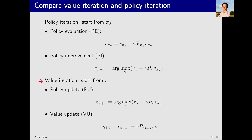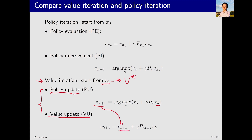Value iteration differs in its starting point. It doesn't start with an initial policy pi zero, but with an initial value v zero. Iteratively, it converges to v star, the optimal state value. Its k-th iteration also has two steps. The first step is policy update, where a new policy pi_{k+1} is derived from v_k. The second step is value update — based on pi_{k+1} and v_k, we calculate v_{k+1}. Then this process continues iteratively.